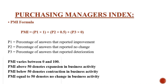PMI is equal to P1 × 1 + P2 × 0.5 + P3 × 0, where P1 is the percentage of answers that reported improvement, P2 is the percentage of answers that reported no change, and P3 is the percentage of answers that reported deterioration.